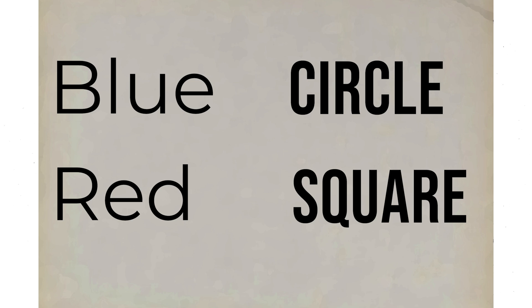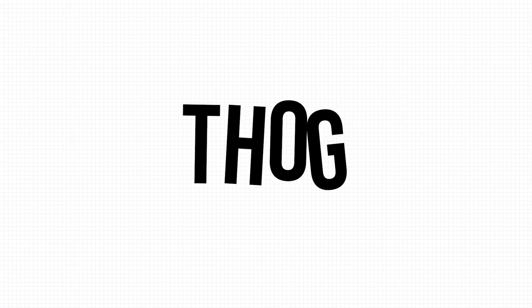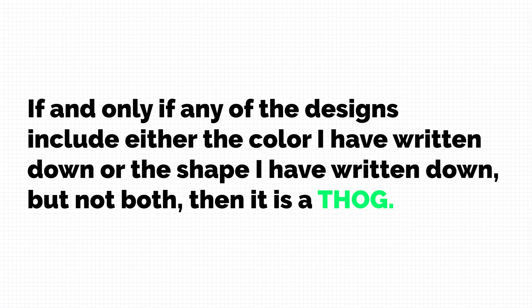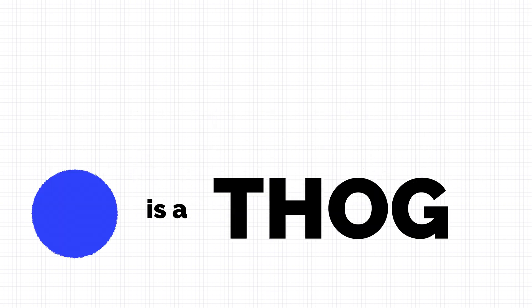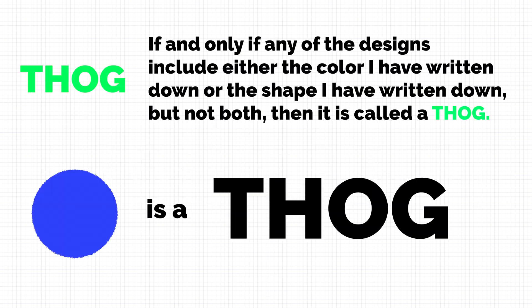Now I want to define what it means for something to be a THOG. It's defined by this rule: if and only if any of the designs include either the color I have written down or the shape I have written down, but not both, then it is a THOG. Looking at my paper, I can see that the blue circle is a THOG.